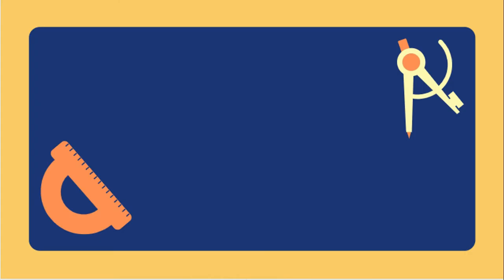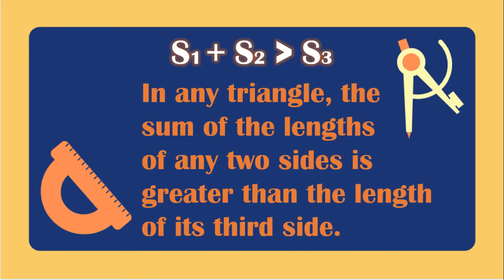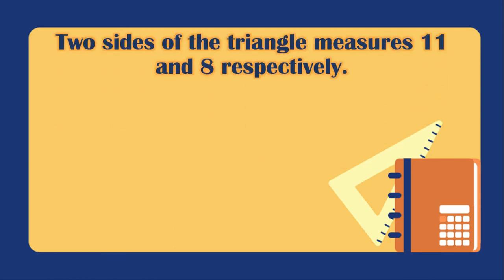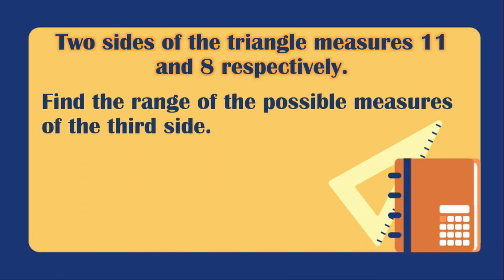Now let's look at the triangle inequality: side 1 plus side 2 is greater than side 3. In any triangle, the sum of the lengths of any two sides is greater than the length of the third side. Example: two sides of a triangle measure 11 and 8 respectively. Find the range of possible measures of the third side.